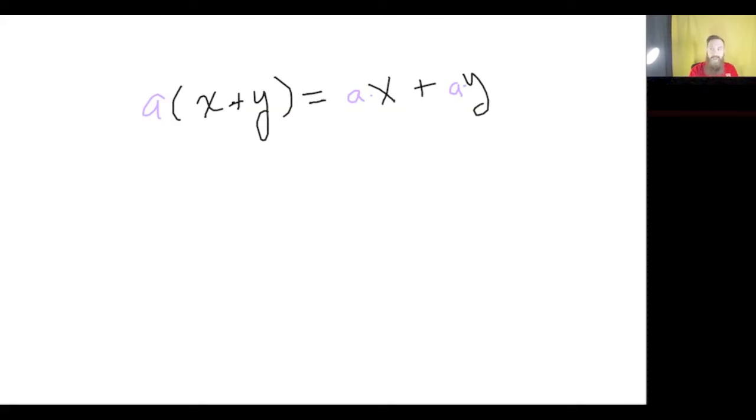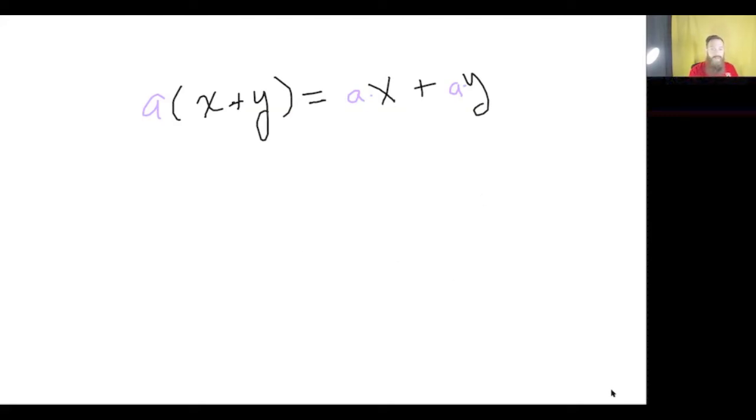We have standard form. All standard form is is just a way of saying we write our equations—we have many ways to write them—but standard form means we have some number, a coefficient times a variable plus the constant equals another number. This should look very familiar because all our equations look like this. Just looking at these two problems, what is the first one in standard form? No, right?